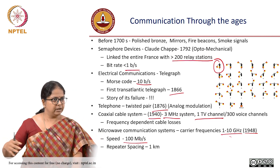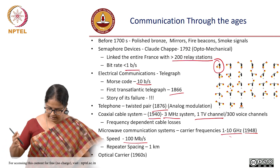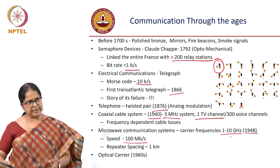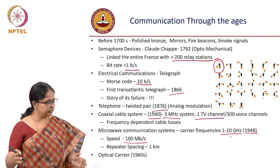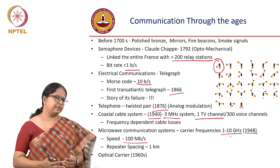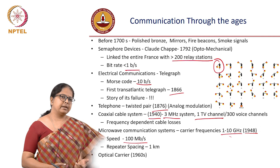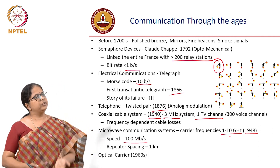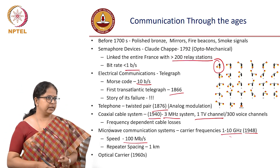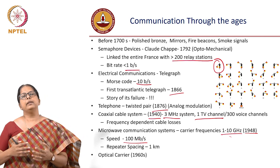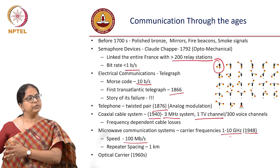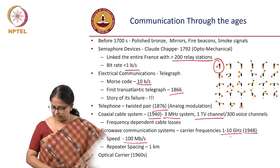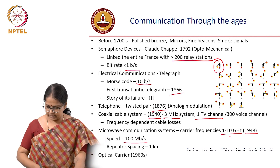But the limitation was bandwidth — how do you scale bandwidth? That is when optical carriers started coming in. Microwave carriers operate at several gigahertz, but bandwidth or information capacity increases only when your carrier frequency increases. Optical carriers were a very good choice because the carrier frequency is of the order of terahertz, so you could modulate at very fast rates. Around the 1960s, optical communication began.